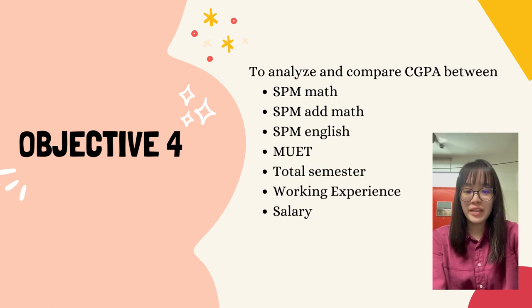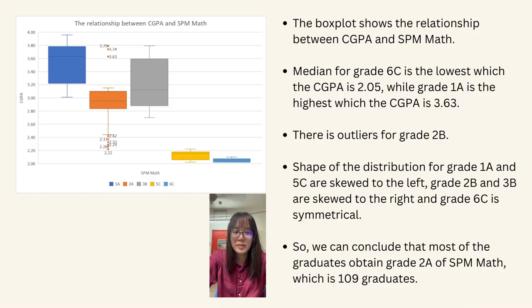I would like to present Objective 4. In Objective 4, we need to analyze and compare CGPA between SPM Maths, SPM MS, SPM English, MUED, total semester, working experience, and salary. The box plot shows the relationship between CGPA and SPM Maths. The median for grade 6C is the lowest, with a CGPA of 2.05, while grade 1A is the highest at 3.63. There are outliers for grade 2B. The distribution for grades 1A and 5C are skewed to the left, grades 2B and 3B are skewed to the right, and grade 6C is symmetrical. We can conclude that most graduates obtained grade 2A for SPM Maths, which is 109 graduates.